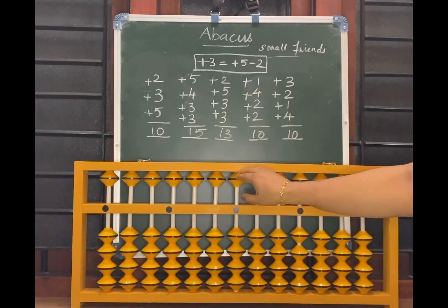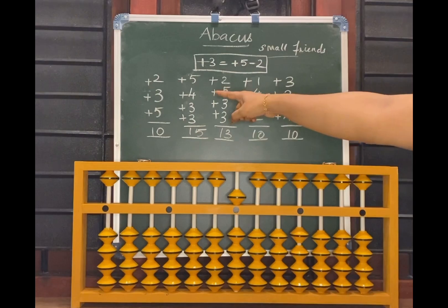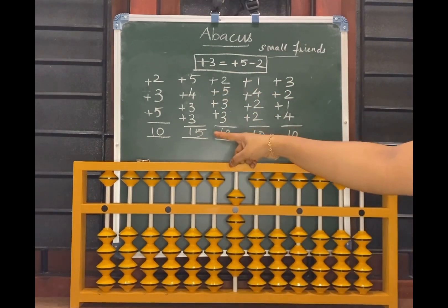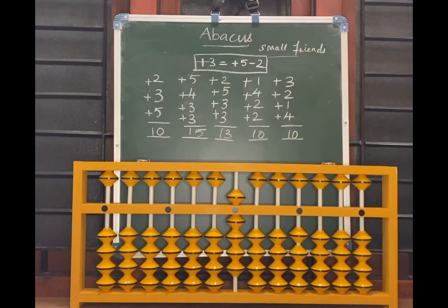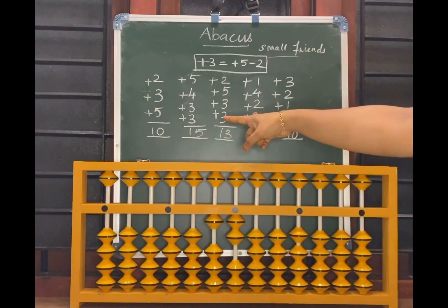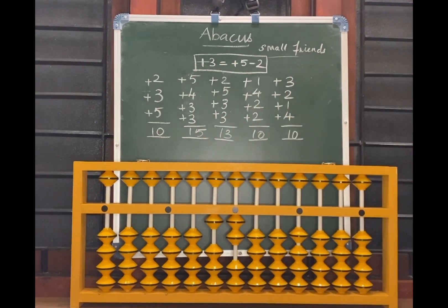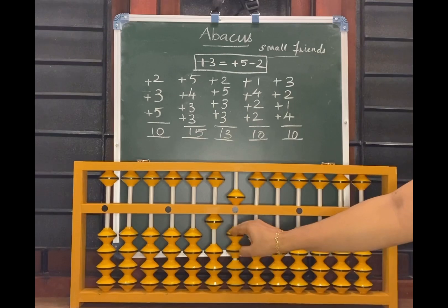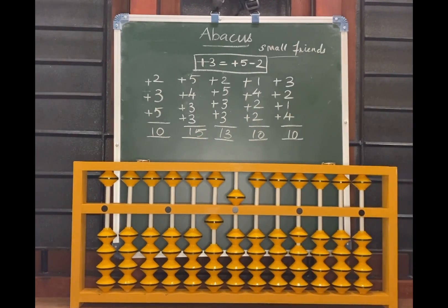Next one, 5 is here. Next 4, 3, how to add 3? What is the formula for 3? Add 10 less 7. Now again 3, how to add 3? Apply this formula, add 5 less 2. What is the answer now? 15.